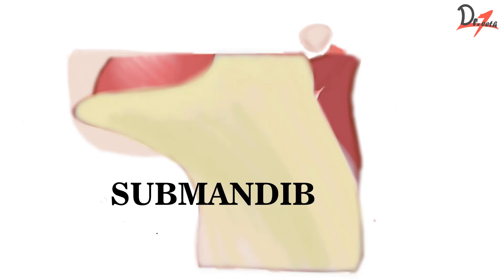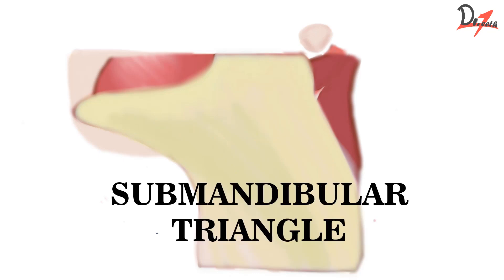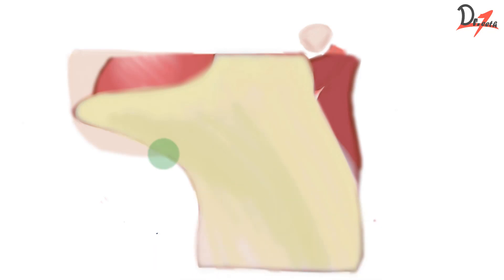The digastric triangle is also known as the submandibular triangle. So as the name suggests, the triangle will be just below the mandible. Now here I have a side face — this is the side of the neck — and I'm going to remove the layers one by one, starting from the skin, and we'll have a look at all the structures we have.